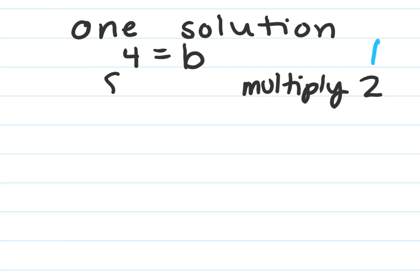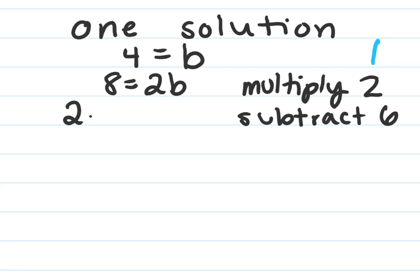So that's going to give me 8 equals 2b, and I'm going to subtract by 6. So 8 minus 6 is 2 equals 2b minus 6. Now I'm going to multiply by 3.